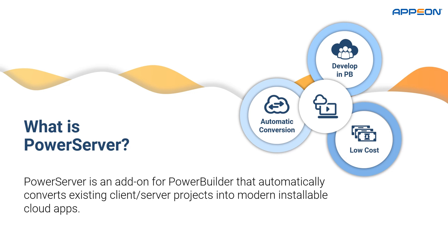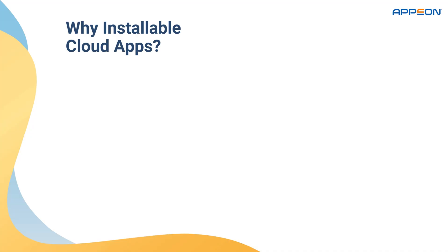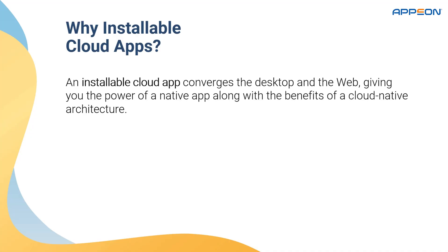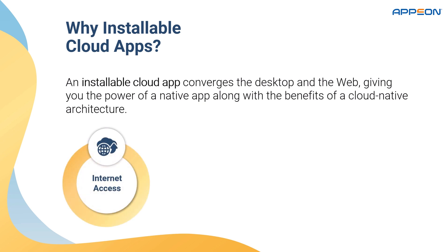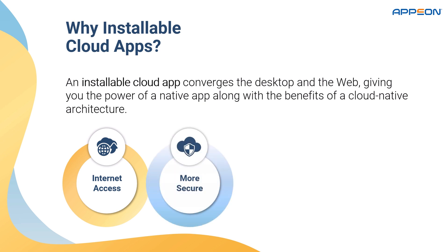So why installable cloud applications? An installable cloud app converges the desktop and the web, giving you the power of a native app along with the benefits of a cloud-native architecture. For internet access, all you need is an internet connection to download and start using the application on a variety of Windows devices. It's more secure because users no longer have direct access to the enterprise database, and all SQL executes on the .NET server safely behind the firewall.